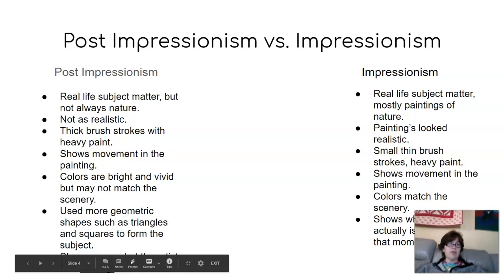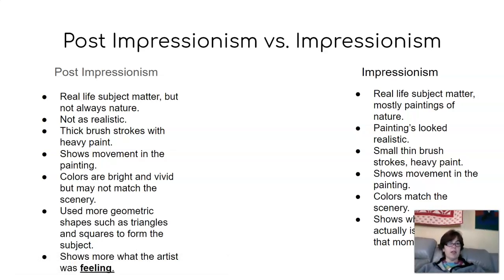So now I'm going to show you guys the difference between a Post-Impressionist and an Impressionist painter. Post-Impressionism, like Emily Carr, painted real-life subject matter, but not always nature. And most of the time an Impressionist artist, like Claude Monet, painted real-life subject matter, but most of the time it was nature. Post-Impressionism is not very realistic, whereas an Impressionist, like Monet, tries to make their paintings look very realistic.